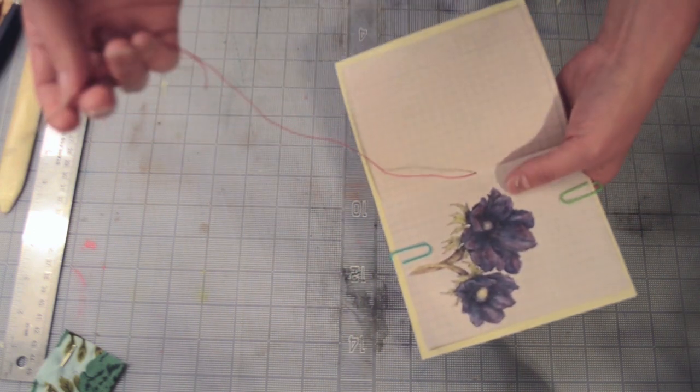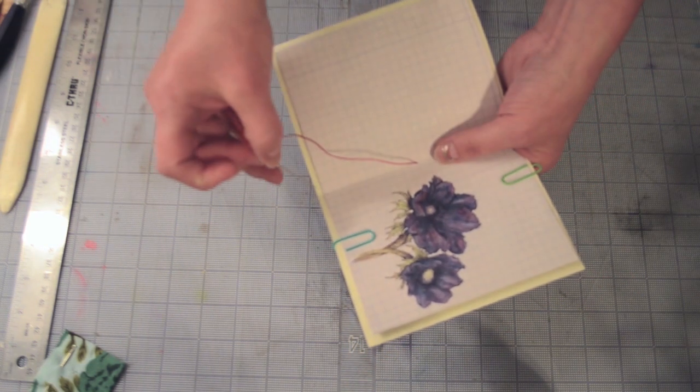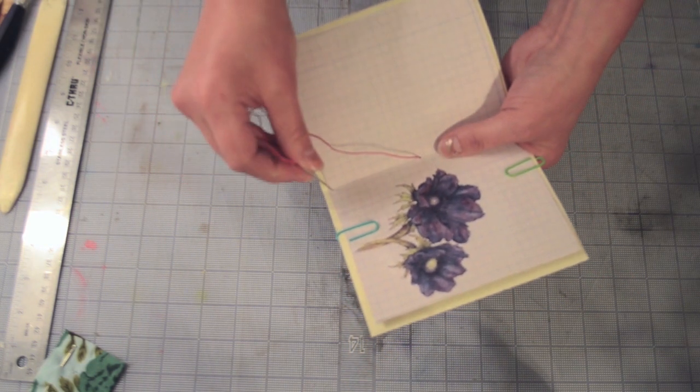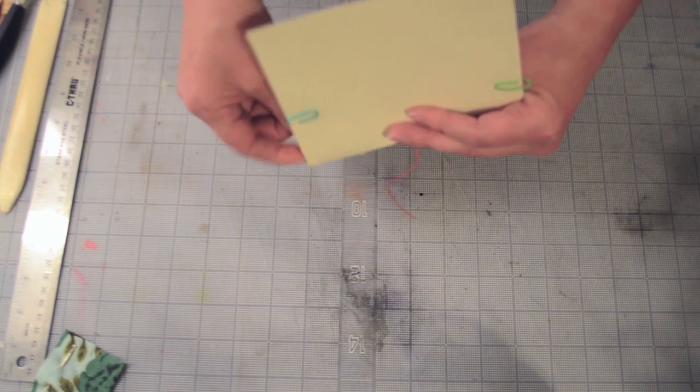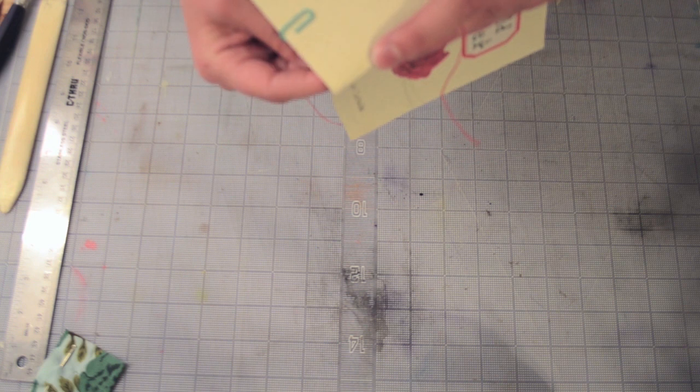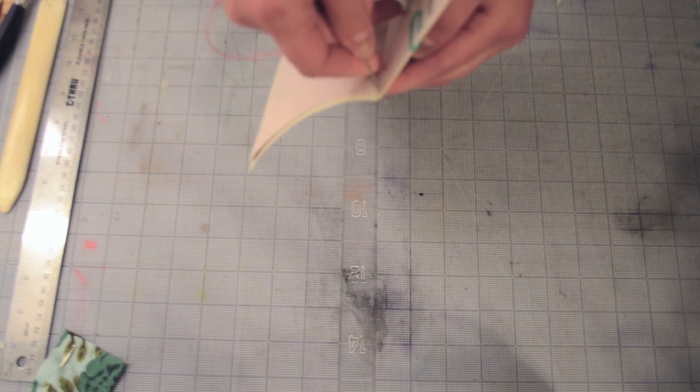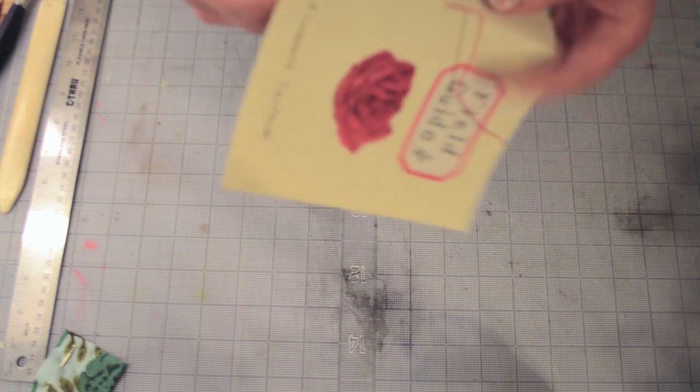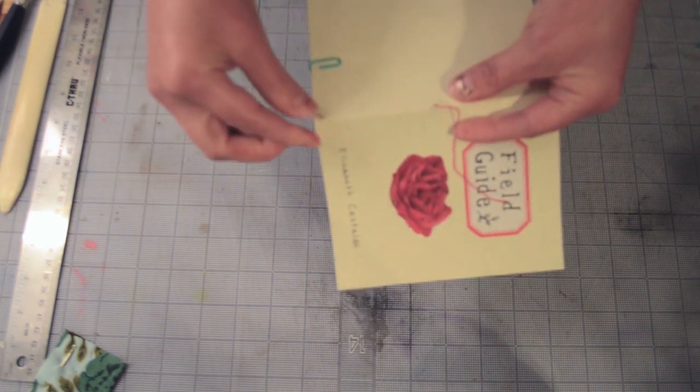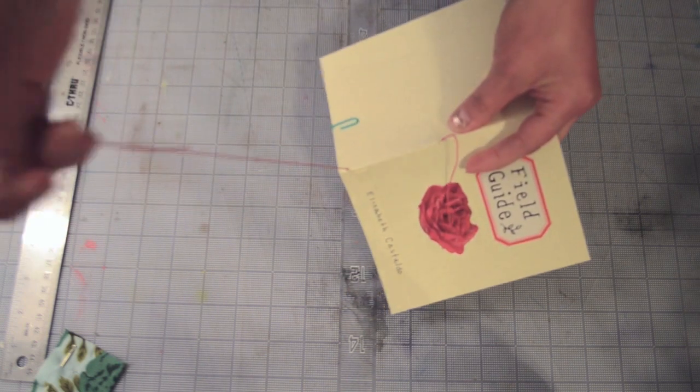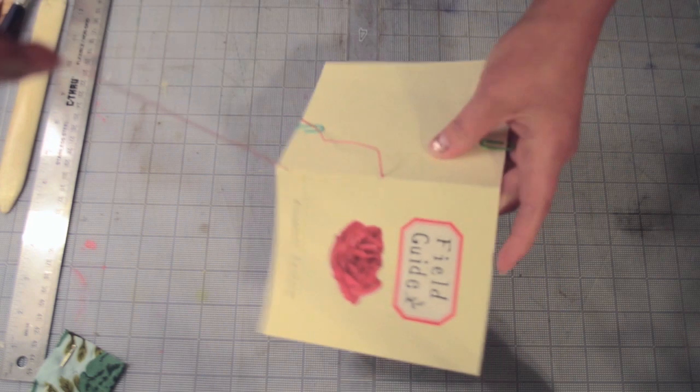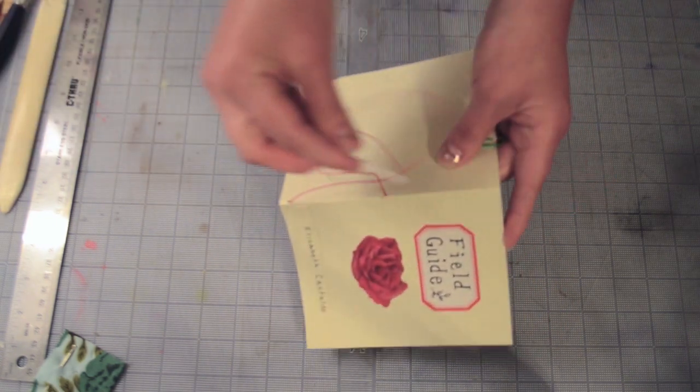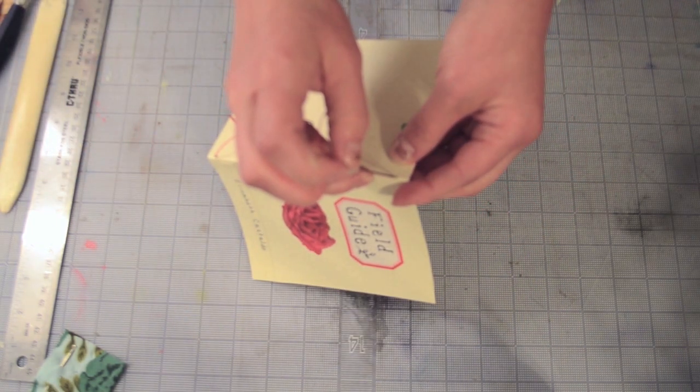And next, you want to go through the bottom sewing station. And again, make sure that your needle's coming out where you want it to. And once you pull the thread through to the outside, you're going to skip over the center and go right through the top station.